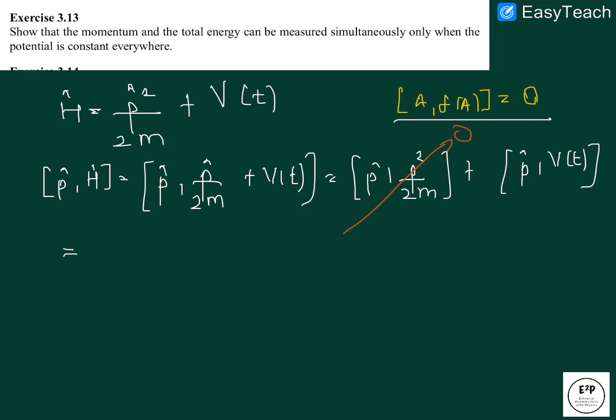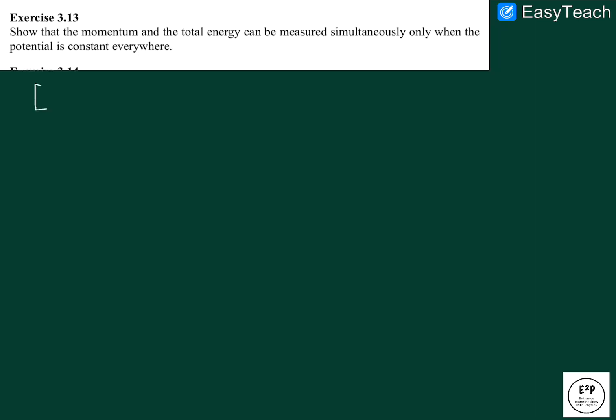Now we have to show p hat and V of t, what is the commutator of p hat and V of t. We can put the value of p hat as minus i h bar times del operator V of t. Now using some test function on this commutator, that is minus i h bar del V of t applied on some test function psi, we get minus i h bar V of t into gradient of psi.